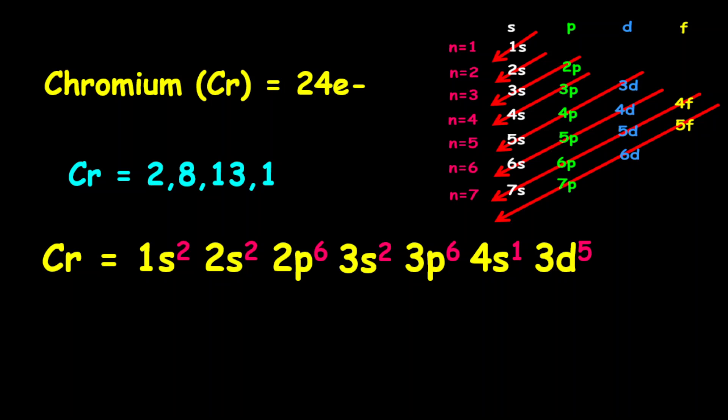Remember that a d orbital holds up to 10 electrons. Therefore, if one electron is shifted over from the 4s to the 3d to make it 5, which is half of 10, then it is more stable than having 4.